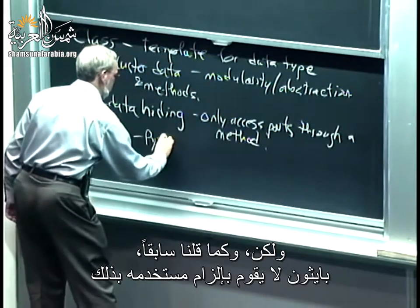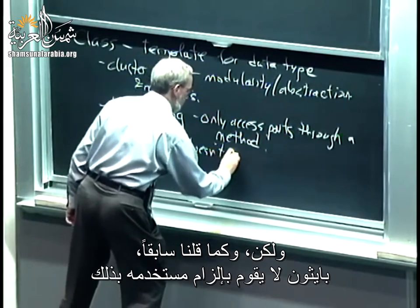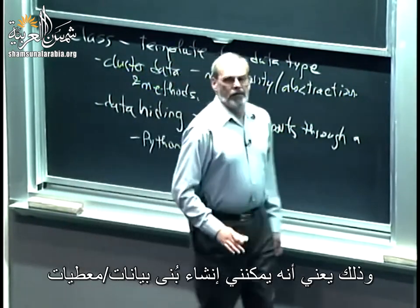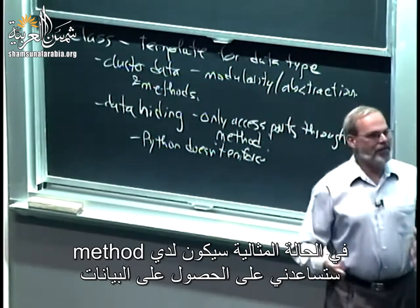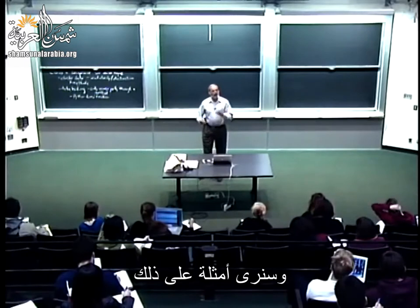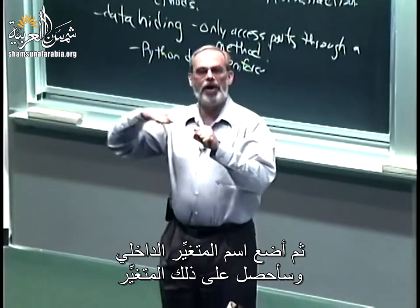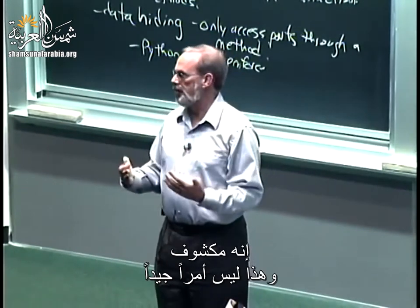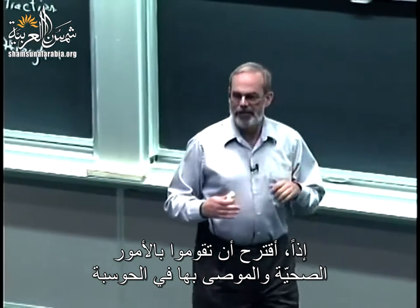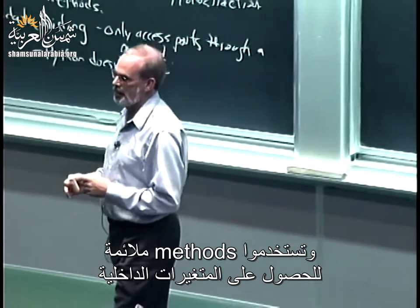As we said, unfortunately Python does not enforce data hiding. Meaning I could create one of these data structures, and ideally I'd have a method I use to get parts out, but in Python you can take the name of the instance, dot some internal variable, and you'll get it back. It's exposed. This is actually not a good idea, so I suggested you practice computational hygiene and only use appropriate methods to get the parts out.